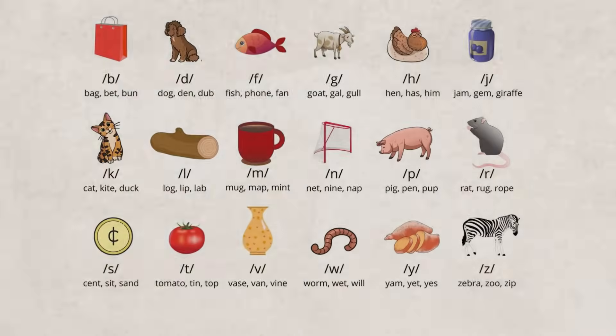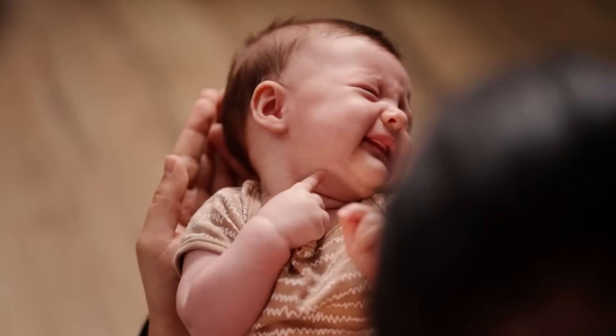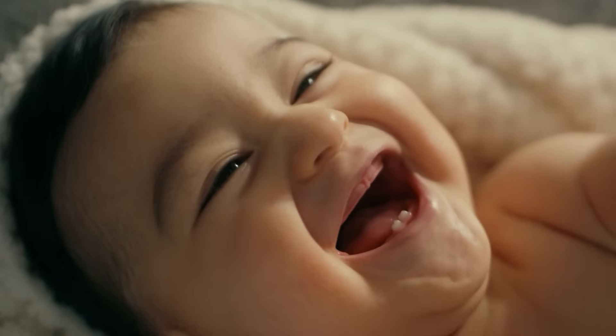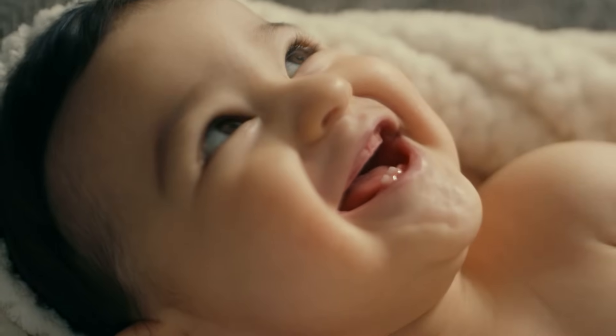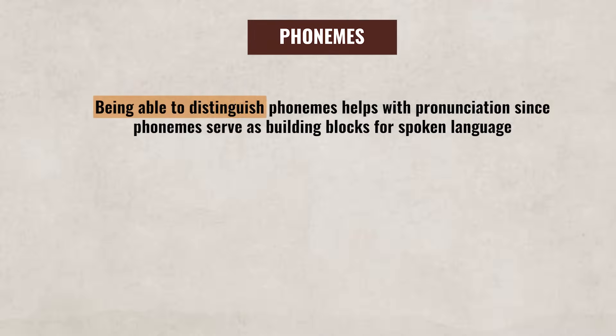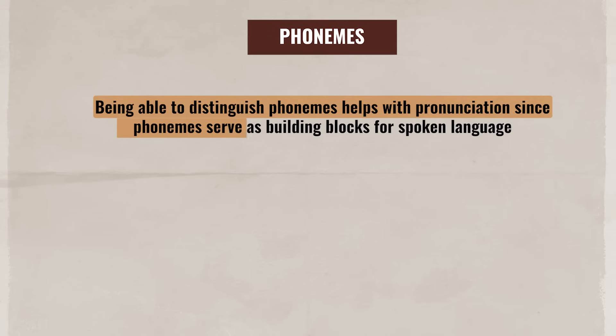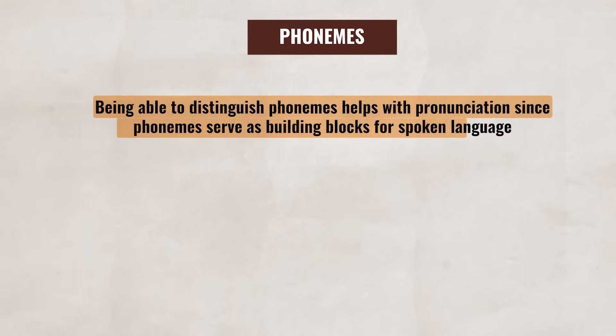Let's start by breaking down language by focusing on the smallest units of sound, which are phonemes. These are often the first sounds an infant makes — for example, the 'b' sound in bat or the 'mm' sound in mom. Phonemes do not have any inherent meaning, but play a critical role in early language development. Being able to distinguish phonemes helps with pronunciation, since phonemes serve as the building blocks for spoken language.